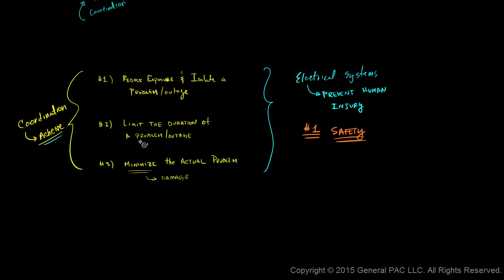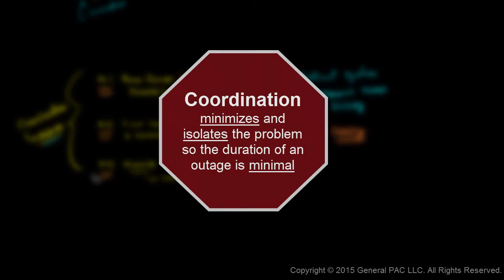A miscoordination does not fulfill or achieve rule number one. A miscoordination does not achieve rule number two. And a miscoordination certainly does not achieve rule number three. So to put it very simply, coordination minimizes and isolates the problem so the duration of an outage is minimal.